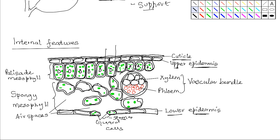The guard cells also have chloroplasts in them, hence they are also photosynthetic. It is through the stomata on the epidermis that carbon dioxide from the atmosphere diffuses into the leaf, while oxygen — a product of photosynthesis — diffuses out of the leaf. In most plants the stomata are mainly located on the lower epidermis in order to minimize water loss, though in some plants there are just as many stomata on the upper epidermis, depending on the environmental conditions and how the plant is adapted to its natural habitat.